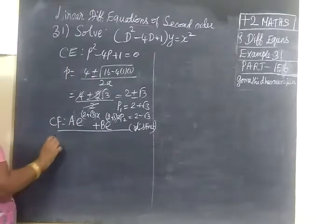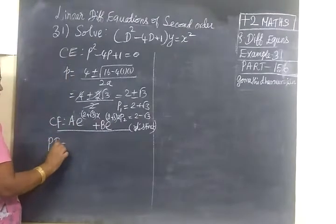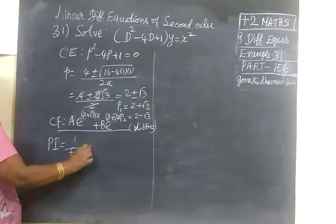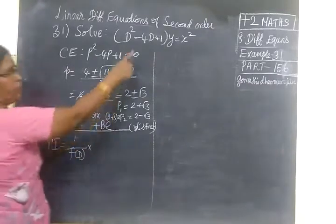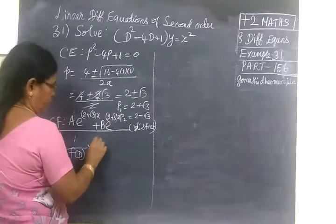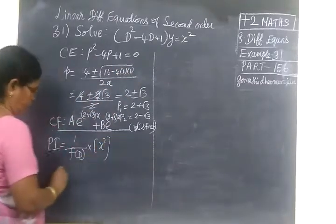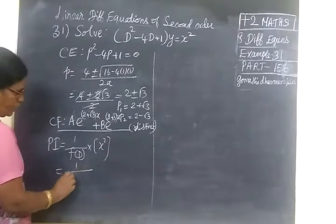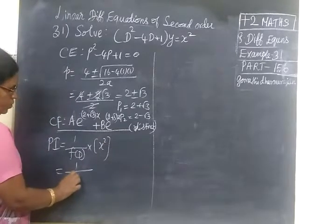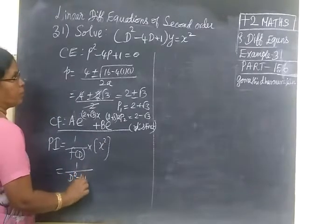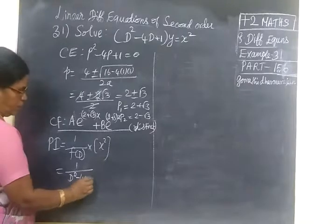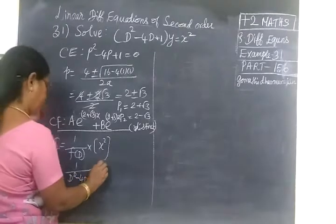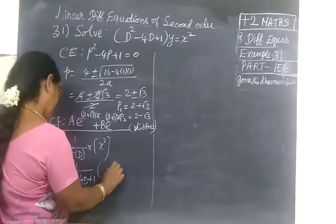Next, write the particular integral. So PI equals 1 over F(D) applied to (1/2)x squared, which is 1 over (D squared minus 4D plus 1) of (1/2)x squared.